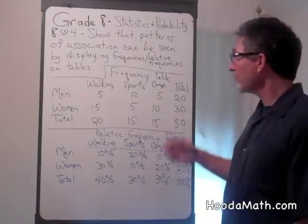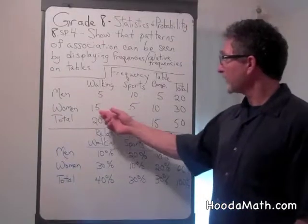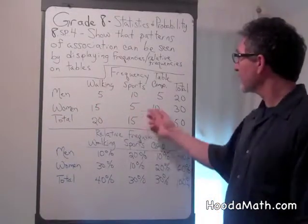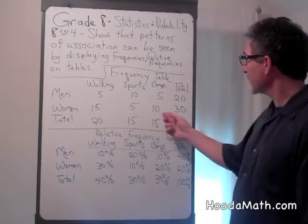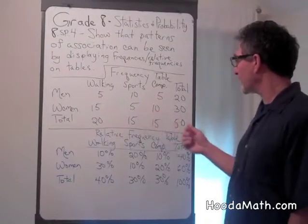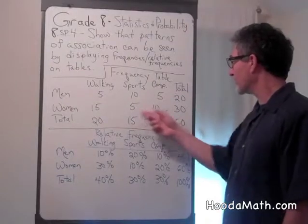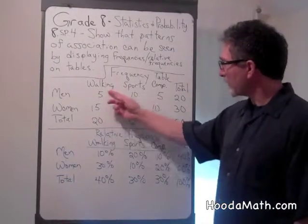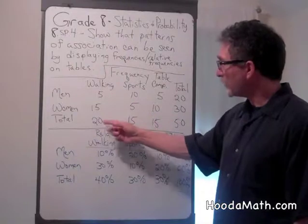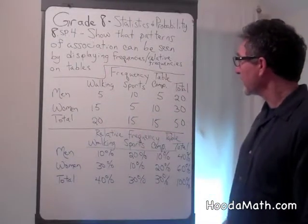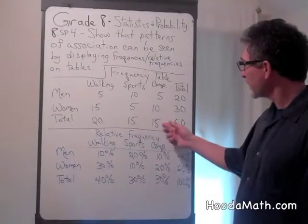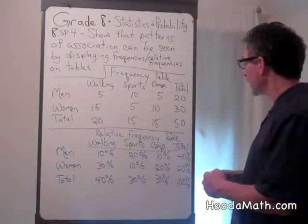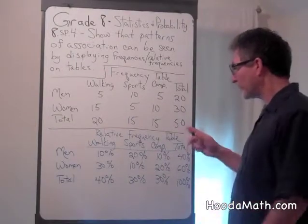There were 30 women surveyed. Fifteen said they would walk for leisure, five said they would do sports, and ten said they would be on the computer, for a total of 30 women. If you add these numbers up, you get 20 people would be walking, 15 playing sports, 15 on the computer, for a total of 50 people.